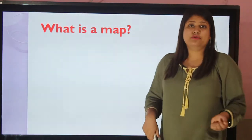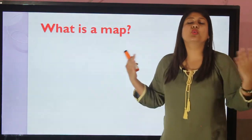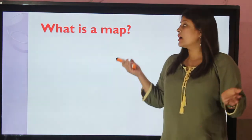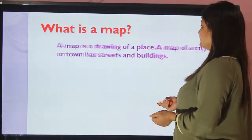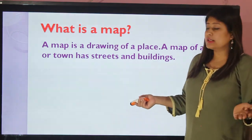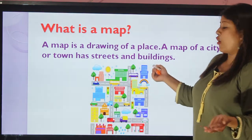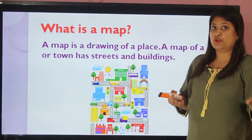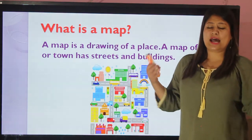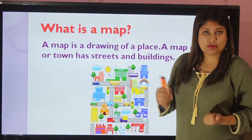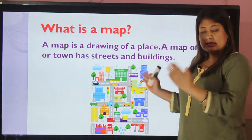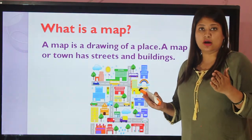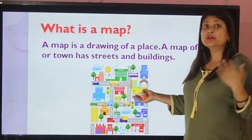First of all, let's learn what is a map. So what do you understand by a map? A map is a drawing of a place. Like you draw the picture of a flower, a house, and many more things — a map is also a drawing of a place.